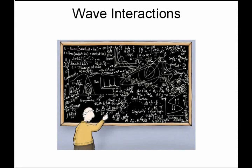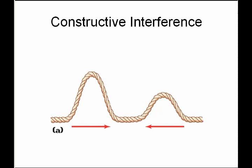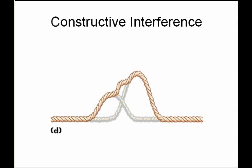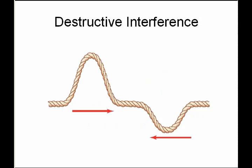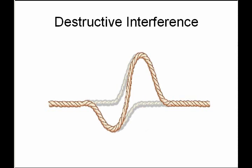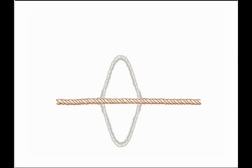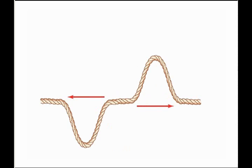Wave interactions. Reviewing from last semester, interference is when two or more waves add together to form a resultant waveform. Constructive interference is when the waves go through each other and add together to make a taller wave. Destructive interference occurs as the waves go through each other and subtract from each other to make a smaller wave. If those waves happen to have the same amplitude, they will completely cancel each other out and we get total destructive interference as they pass through.